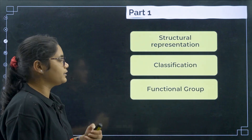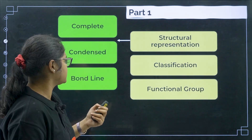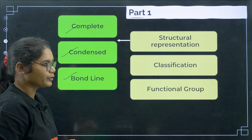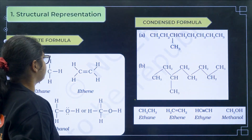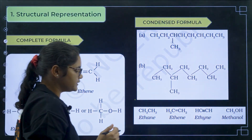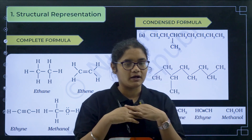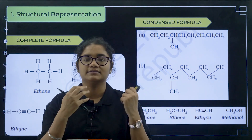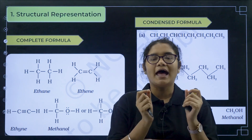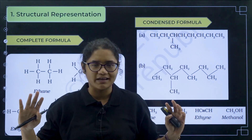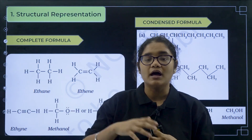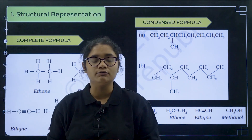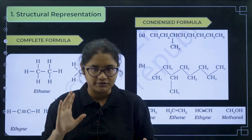Today's class, we are going to discuss structural representation. Under structural representation, we have complete, condensed and bond line formula. We know that carbon can form a different number of compounds because of its valency — that is, carbon has tetravalency and its catenation property, which we have studied in class 10. Carbon has the ability to form long chains and to form four bonds.